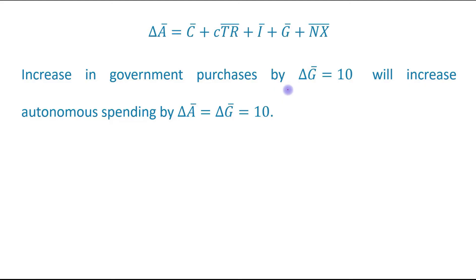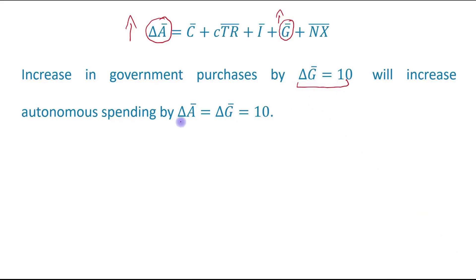An increase in government purchases by Δḡ = 10 will increase the autonomous spending. If this value is increased, then definitely autonomous spending will also increase. Because in our case Δḡ = 10, the autonomous spending will also be increased by 10. So the increase in government purchases by Δḡ = 10 will increase autonomous spending by Δā = Δḡ = 10.